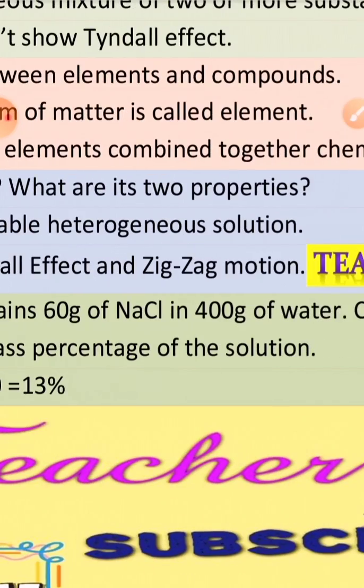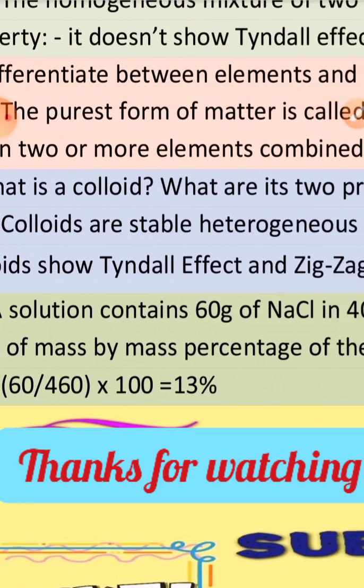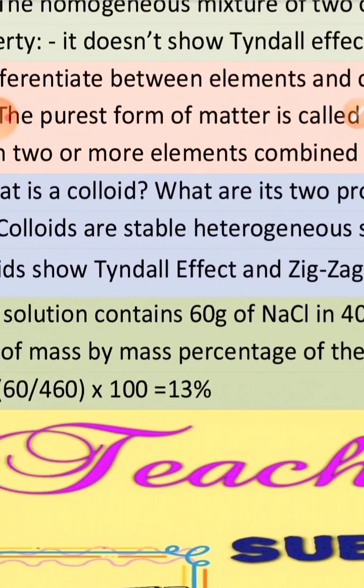So 60 divided by 460 into 100, we get 13%.